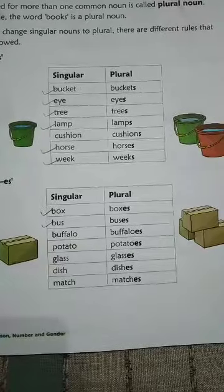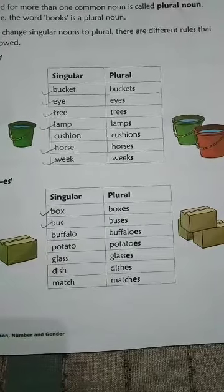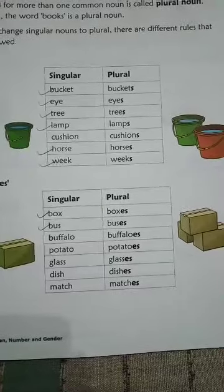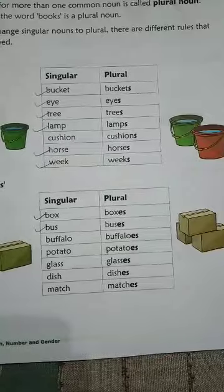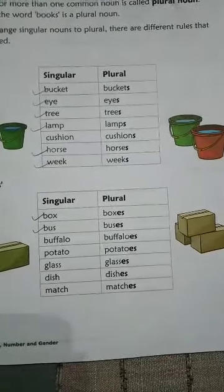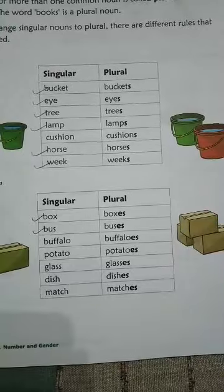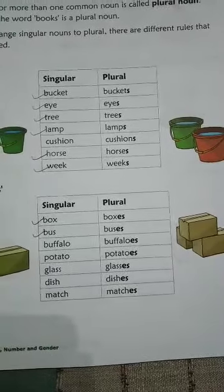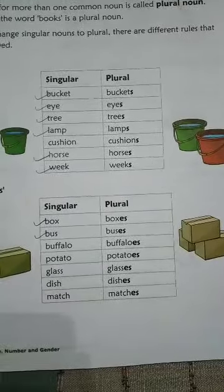Tree — trees, 's' add karna. Lamp — lamps, 's' add karna. Cushion — cushion mein 's' add karna — cushions. Horse — horse mein 's' add karna — horses. Week — week mein 's' add karna — weeks.